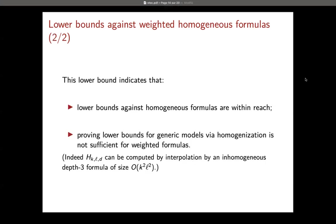This says that lower bounds against homogeneous formulas may be within reach, because weighted homogeneous is a small variant. It also says that if we want to prove lower bounds for the weighted formula model, we cannot go through the high-level homogenization approach I mentioned, because we cannot homogenize at a small cost.